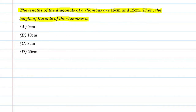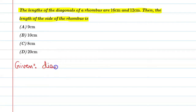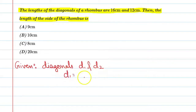Let's start. Given: the diagonals are d1 and d2. The first diagonal d1 is equal to 16 centimeter, and the second diagonal d2 is equal to 12 centimeter.